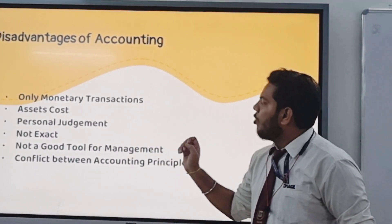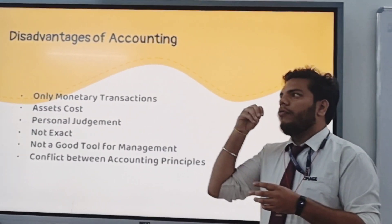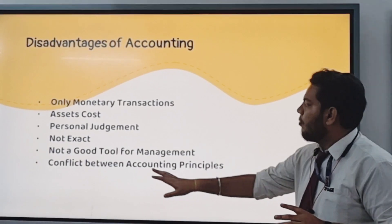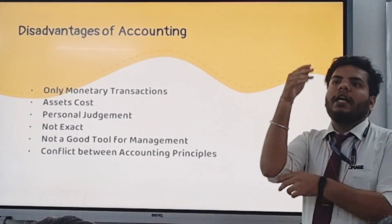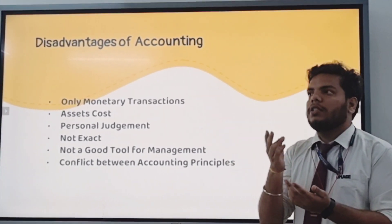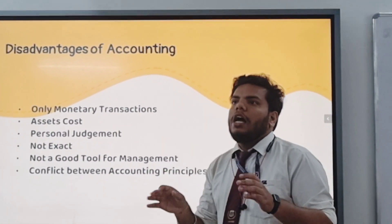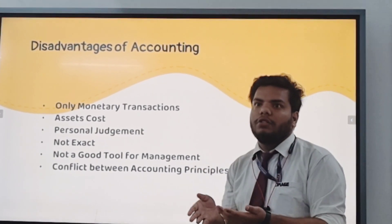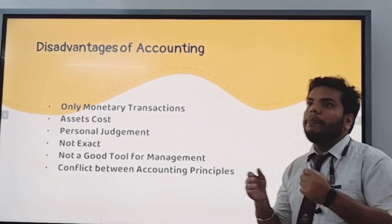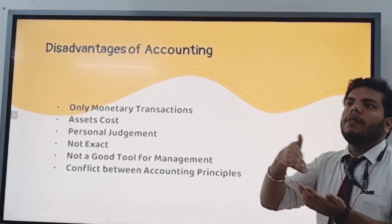Not a good tool for management — accounting is a record of past events, so it cannot be a good tool to predict the future or make plans based on that data. The last and most important point is the conflict between accountants. There are accounting principles like the conservatism concept — in the conservatism principle, all assets are recorded on the basis of their cost, not on the basis of their market values. These are constitutive tools that should always be kept updated.